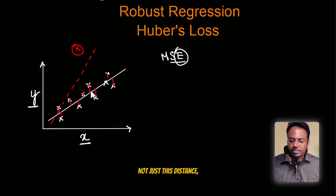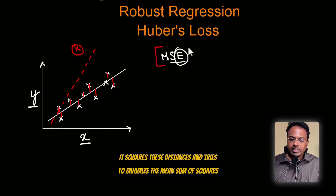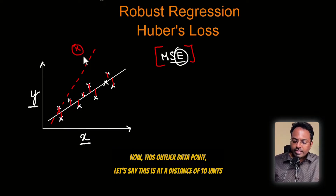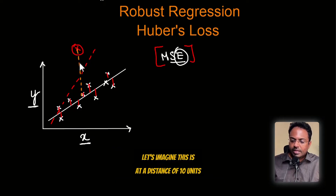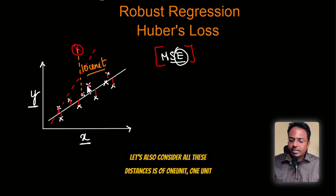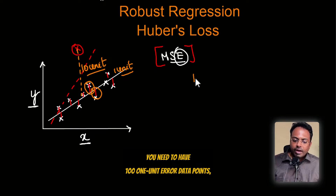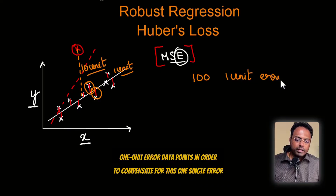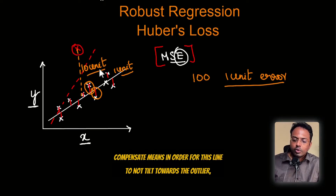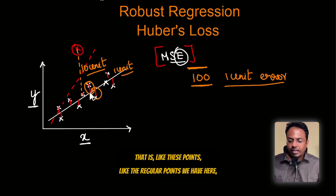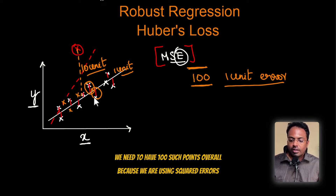It squares the distances and tries to minimize the mean sum of squares. Imagine if you introduce just one single outlier data point at a distance of 10 units, while all other points are at a distance of one unit. Because of squaring, that one outlier contributes 100 units of squared error. So you would need 100 one-unit-error data points just to compensate for that single outlier, because we are using squared errors.